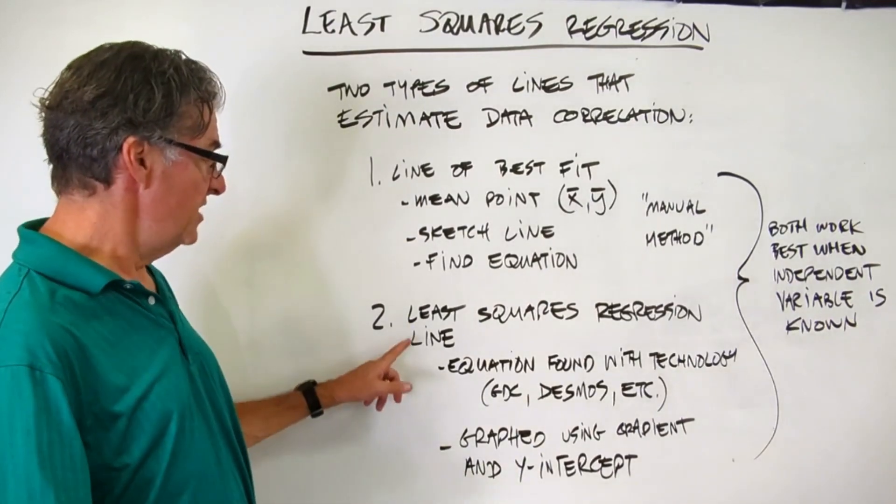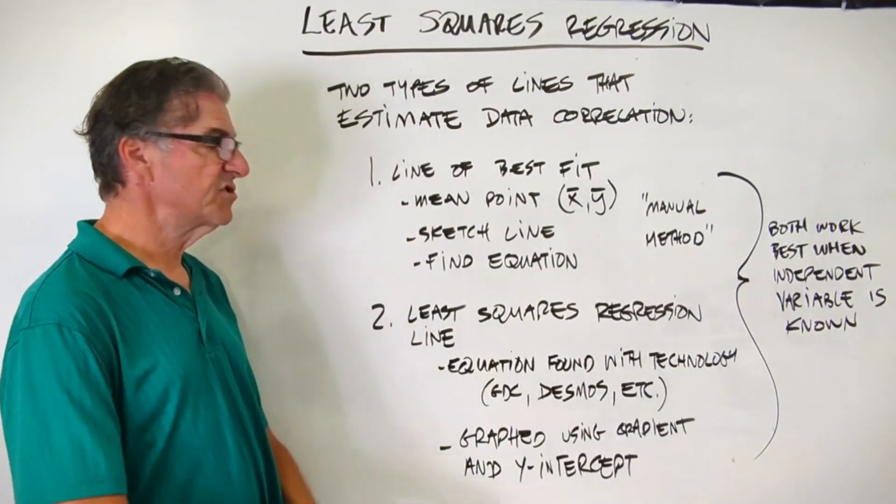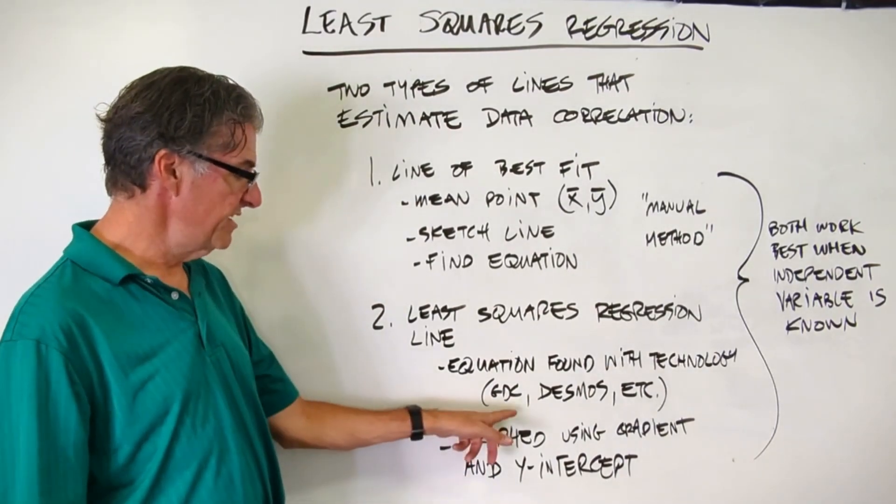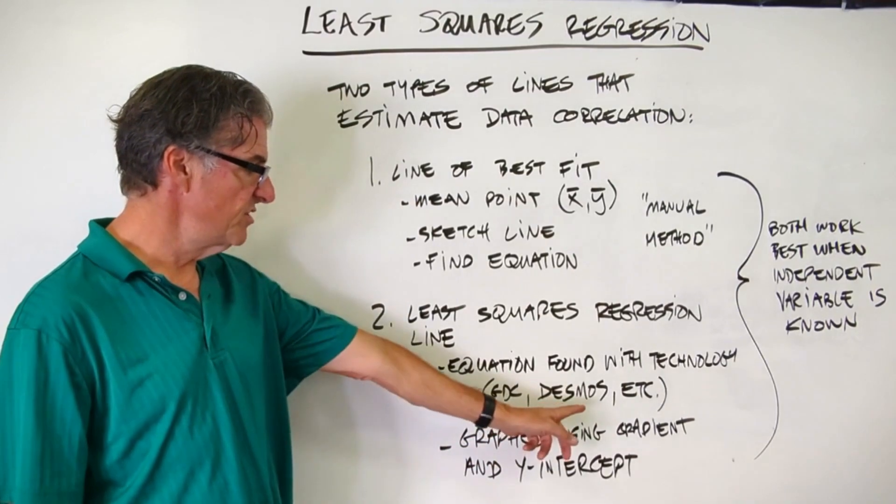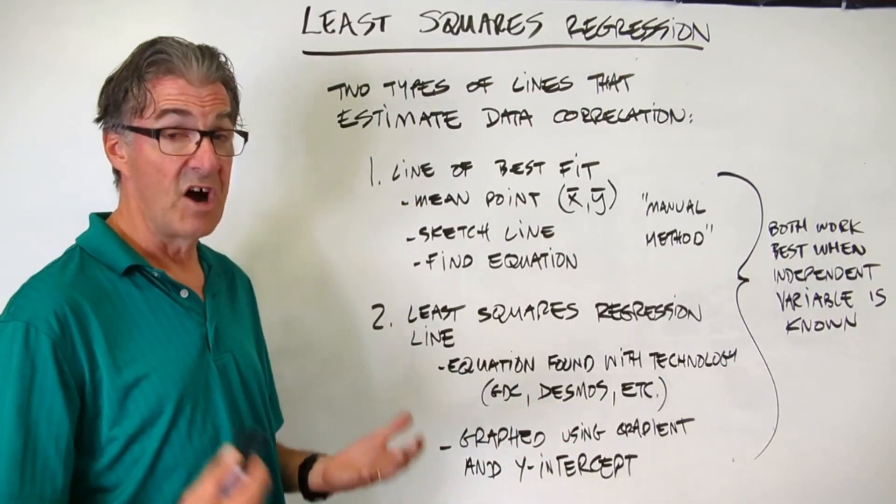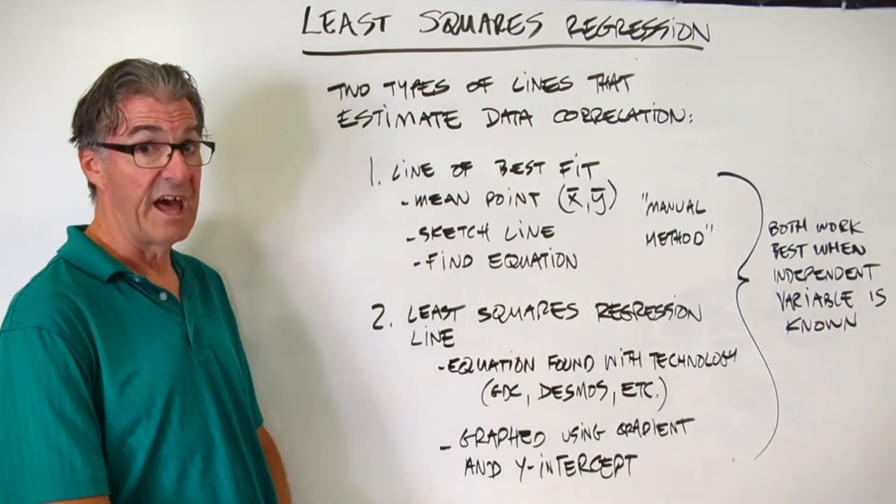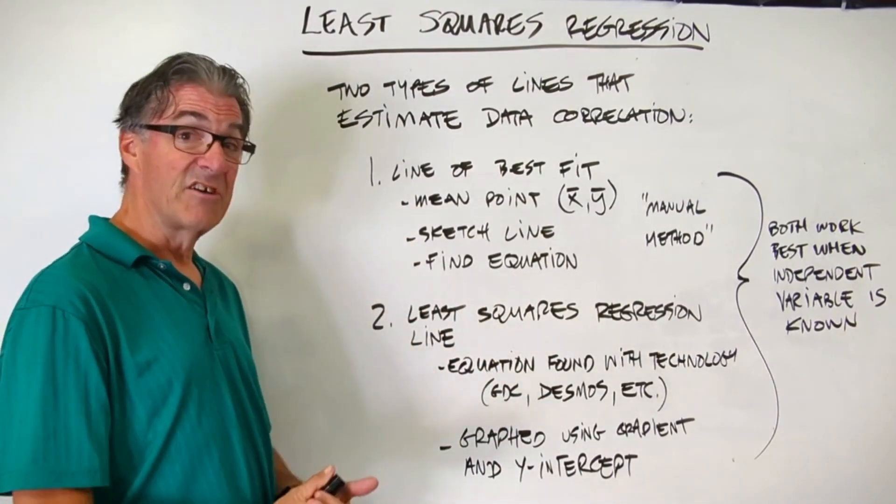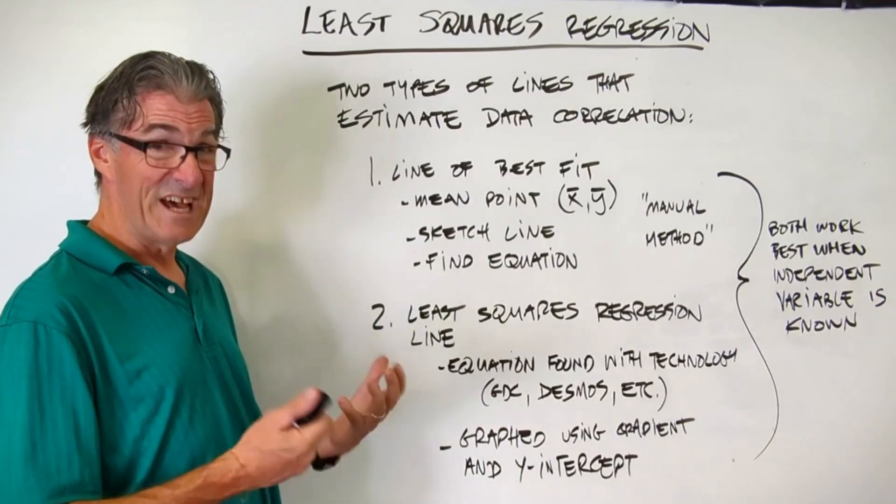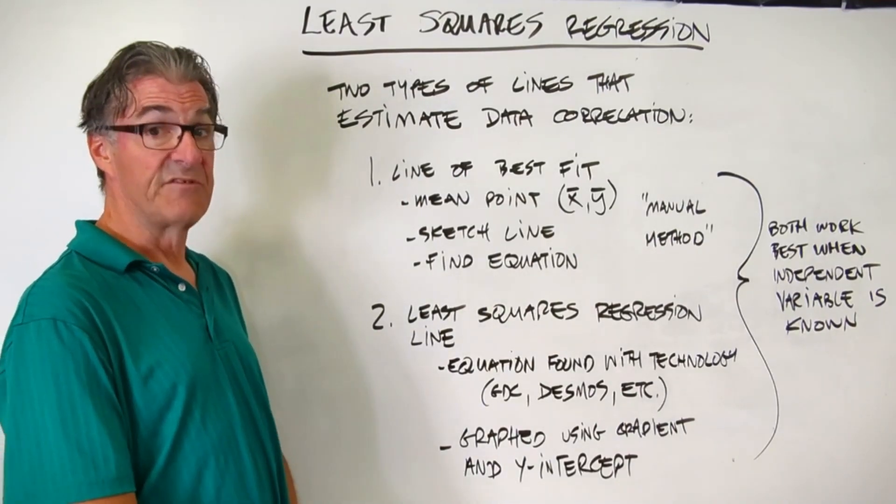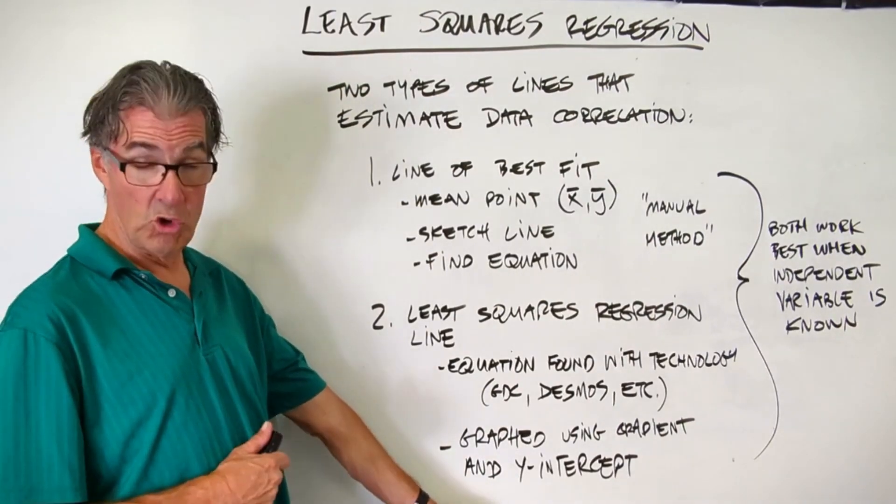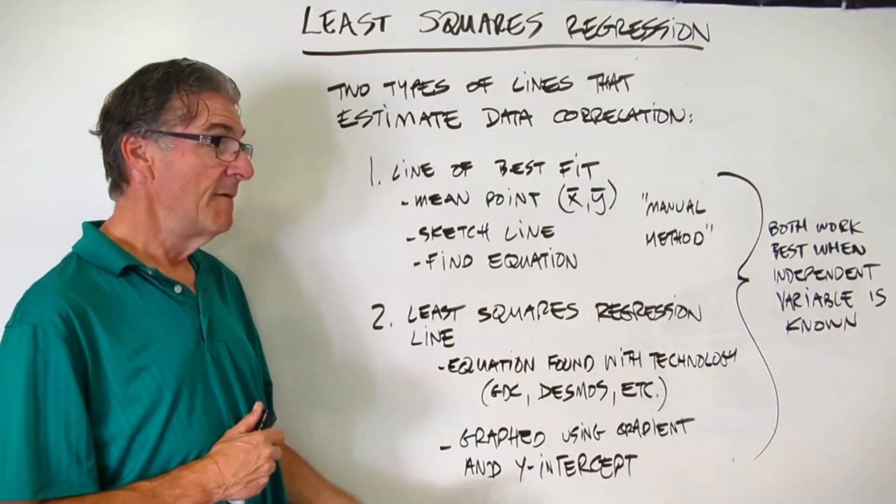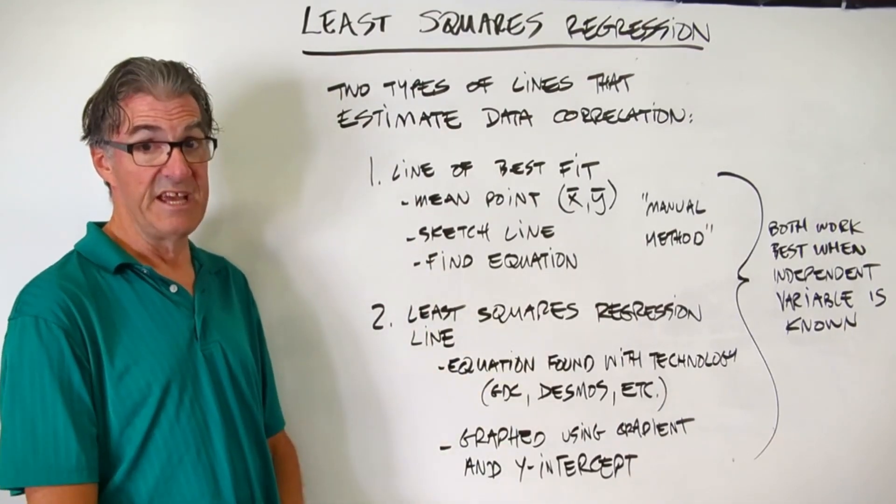So today what we're going to do is we're going to calculate a least squares regression line. And this is done with technology, most likely your graphing display calculator, but you can do this in Desmos, GeoGebra, and probably a ton of other technological tools for doing that. And this is a good technique because you throw the data from the scatter plot into the calculator, and then the calculator will tell you a line of best fit. And then you take that equation, that gradient intercept equation, and you graph the line based on what your calculator told you about the data.